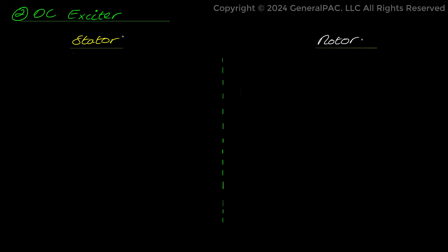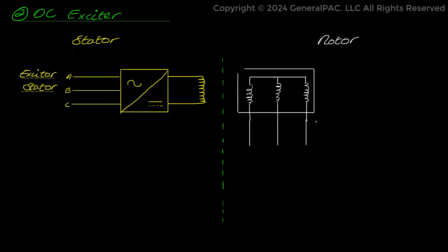We can observe here that in exciter, armature and stator windings switch their positions when compared to main synchronous generator. As we can see in the figure, an external three-phase AC supply is fed to the stator of DC exciter, which is rectified to DC supply using internal electronics. Due to magnetic field generated in field windings on stator, voltage is induced in the armature windings on rotor of DC exciter.